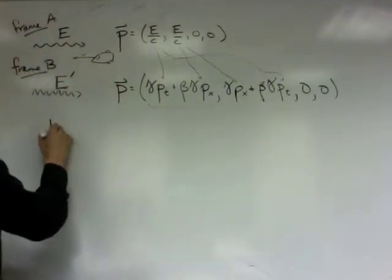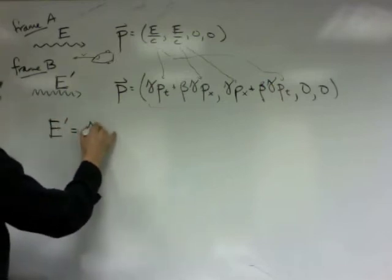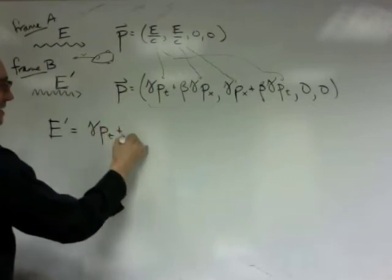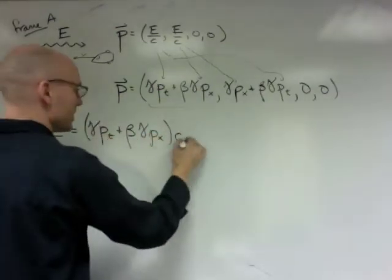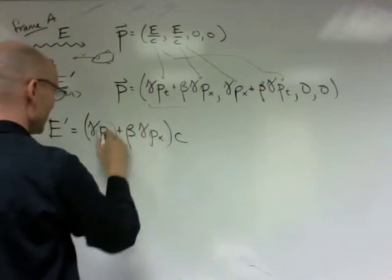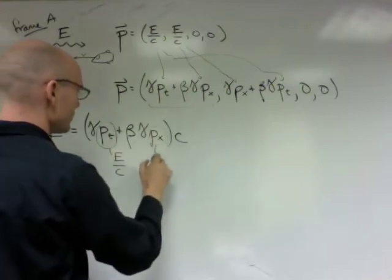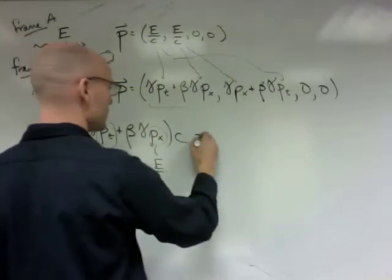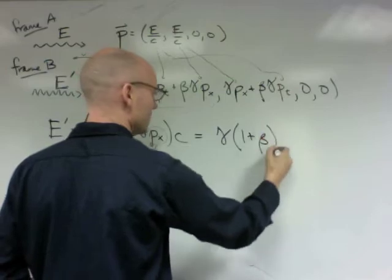So this energy of the photon in this frame is gamma Pt plus beta gamma Px all times the speed of light, because this component is E over C. But this Pt here is the original E over C. And this Px is also the original E over C. And there's a C there. So it's just going to be gamma one plus beta E.